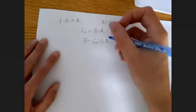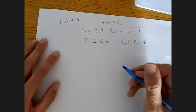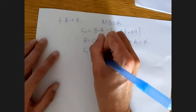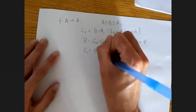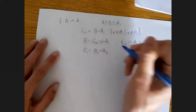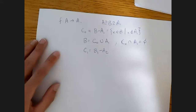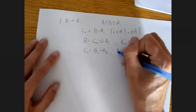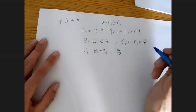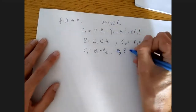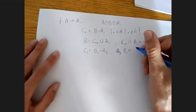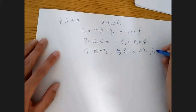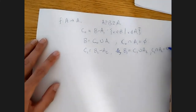But we have the same thing happening inside a1. So we also have c1 equals b1 minus a2. And so we have b1 equals c1 union a2, with c1 intersect a2 equals the empty set.